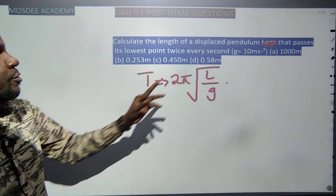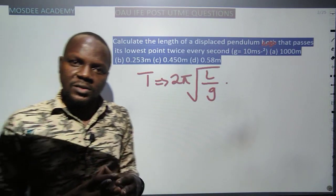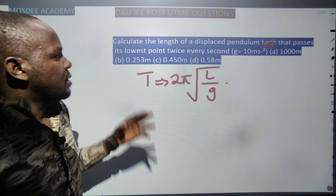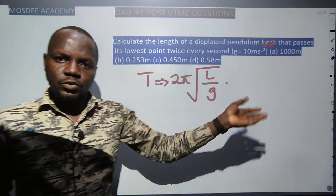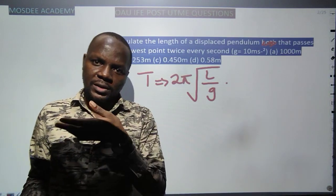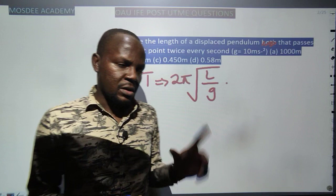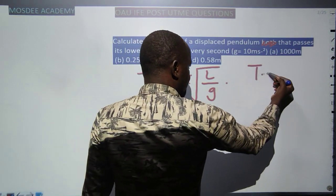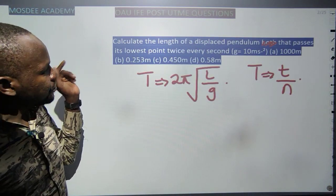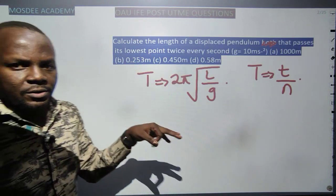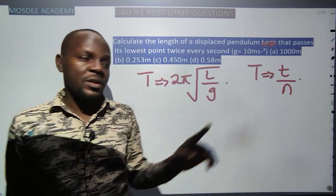We are looking for length L, and g is taken as 10 m/s² unless stated otherwise. The period is the time for a complete oscillation — one to-and-fro motion. The pendulum passes its lowest point twice every second. Twice every second means the period is 1 second, because one complete oscillation requires one forward and one return pass.